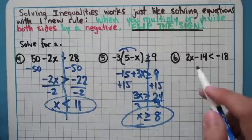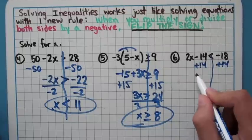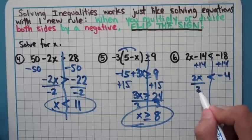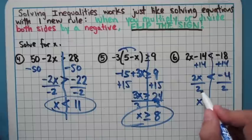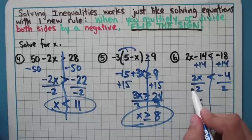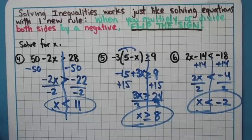And I have one more problem here. Same sort of deal. I add 14 to both sides, get 2x < -4. Divide by 2 on both sides. I do not flip here either because I divided by a positive 2. Kids will be like, oh it's a negative, I've got to flip. Only when the number you multiply or divide by is negative. So this would be my answer, no flip on that one either.